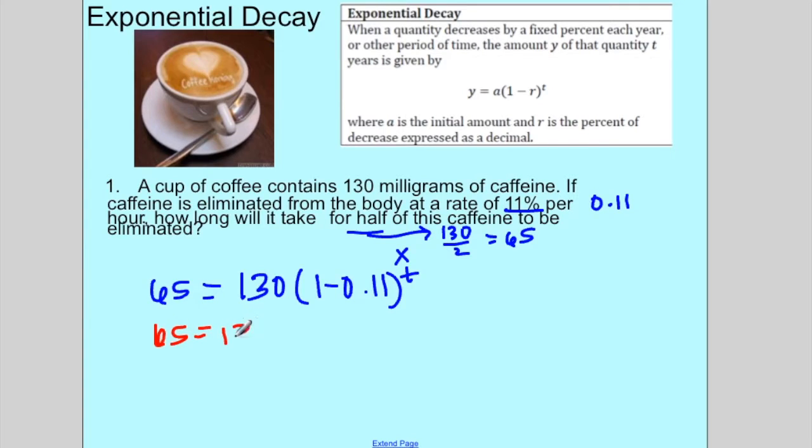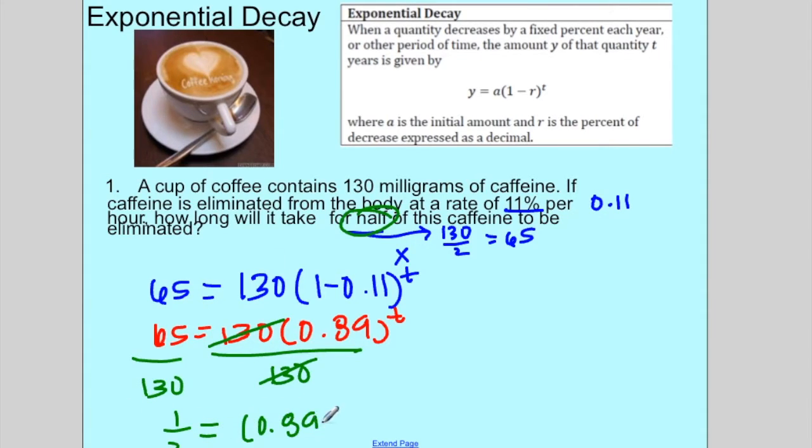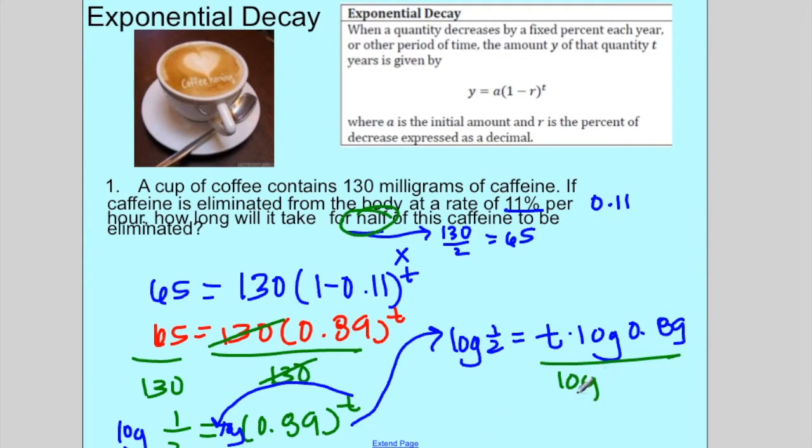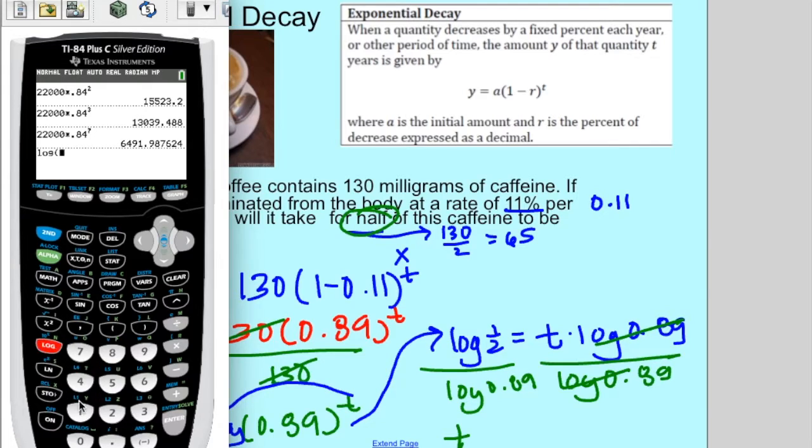So 65 equals 130 times 0.89 to the t. Now let's solve for t. We've solved problems like this before, so this first step is to divide by 130. 65 divided by 130 is 1 half, which it shouldn't be surprising because we're saying half of it. So 0.89 to the t. Now, in order to solve from here, we would have to take log on both sides. We have log of 1 half. That allows me to bring my t down in front. So I have log of 1 half equals t times log of 0.89. If I want to solve for t, I would divide both sides by log of 0.89.